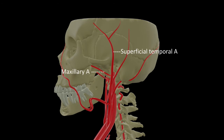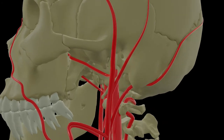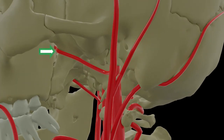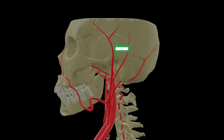The two terminal branches of the external carotid artery are the maxillary and superficial temporal arteries. The maxillary artery runs forwards and enters the pterygopalatine fossa through the pterygomaxillary fissure. The other terminal branch, the superficial temporal artery, runs over the temporal region. Together these eight branches supply most of the structures in head and neck.